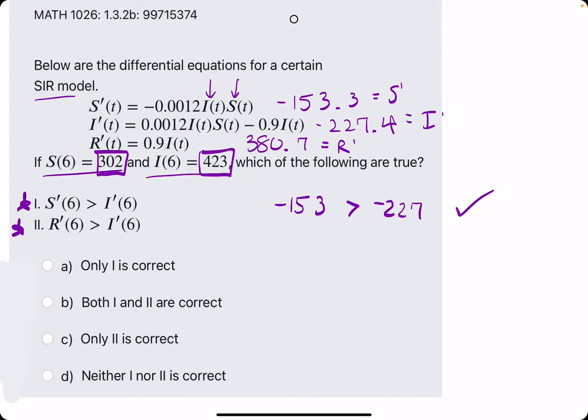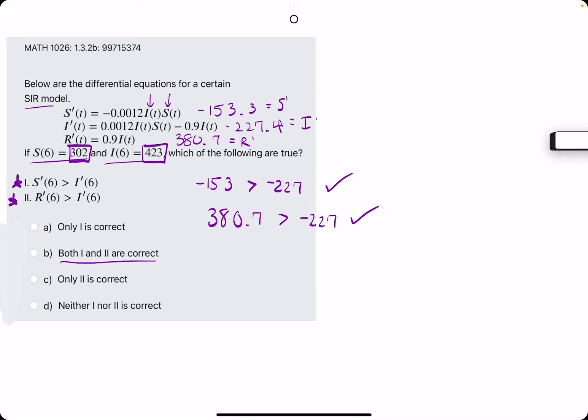Number two, R prime is 380, positive value, and they say it's greater than I prime, which again is a negative value. So of course this is true. And so it looks like both 1 and 2 are correct.